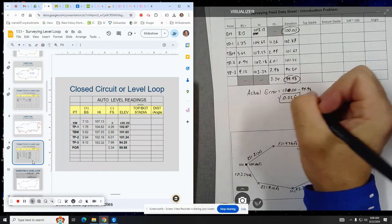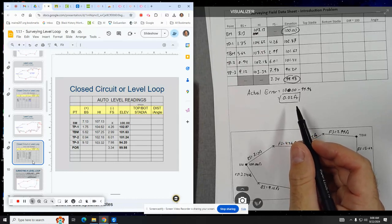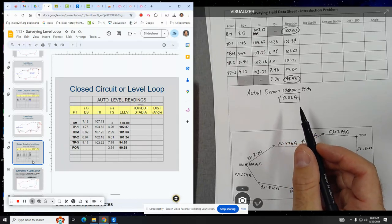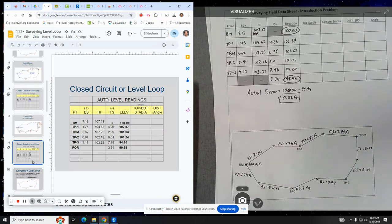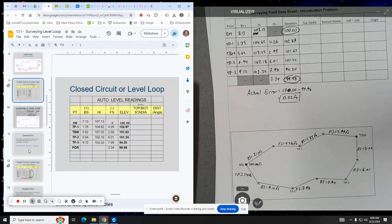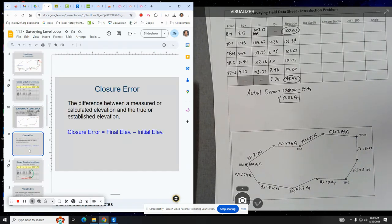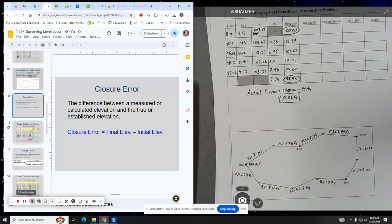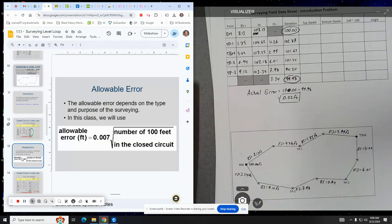And the idea is, in reality, there's always going to be some level of error. Is it acceptable? Is the level of error acceptable? And the way in which you do this analysis is the closure error or the allowable error is you do this calculation, which kind of seems like a random calculation. But it's what the industry uses. It's 0.007 times the square root of the length of the loop divided by a hundred.